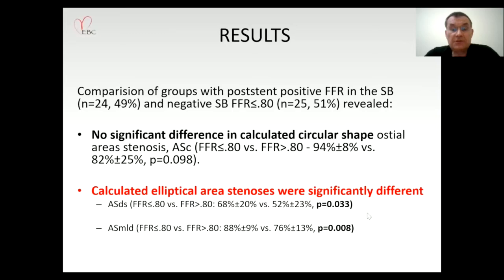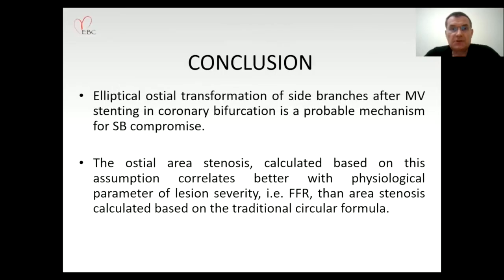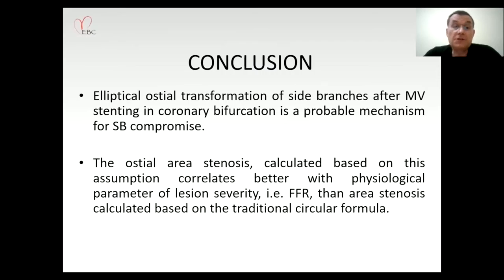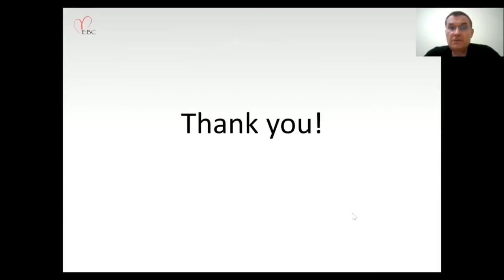The study was verified using 49 patients from the FIESTA study cohort, comparing FFR results after main vessel stenting in patients without versus with side branch pre-dilatation. When ostial area stenosis was calculated assuming circular shape, there was no significant difference between FFR-positive and FFR-negative groups. However, when area stenosis was calculated as ellipse using either assumption, there was a significant difference — with much more severe ostial area stenosis in functionally significant cases. The elliptical ostio-transformation correlates better with FFR than the traditional circular formula.